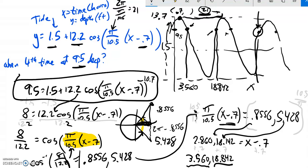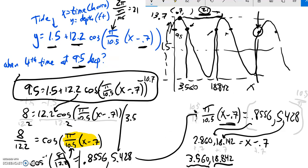So my solutions for this actually come in the form 3.560 plus some multiple of 21, and 18.842 plus the period.